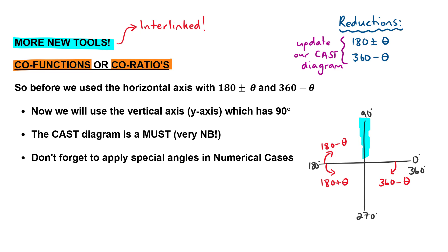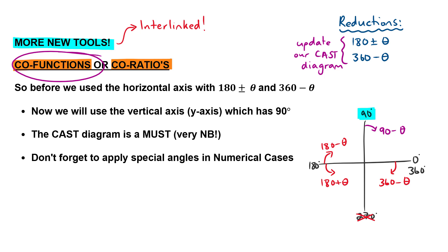Now that we've done that, we'll be focusing on the vertical axis — the y-axis. You can go and cross out the 270 at the bottom; we don't ever use reductions or co-ratios that involve 270 degrees. That means we're left with 90 degrees, so you can probably already see that the co-functions we're going to deal with in this video will make use of 90 minus theta and 90 plus theta. It's extremely important to draw your CAST diagram so you can see where each of these reductions and co-functions lie in the Cartesian plane and whether our ratios will be positive or negative.